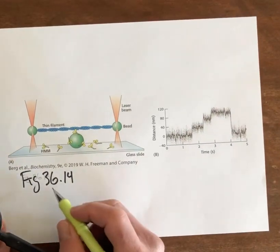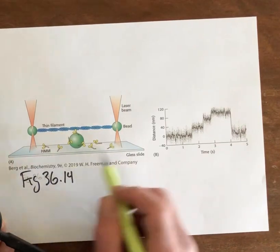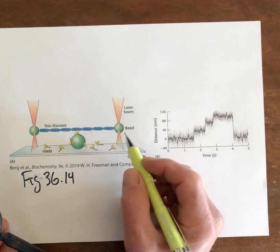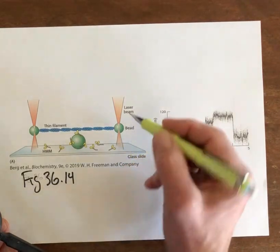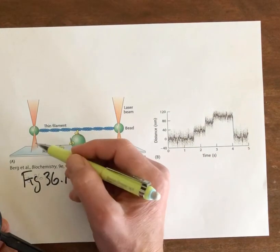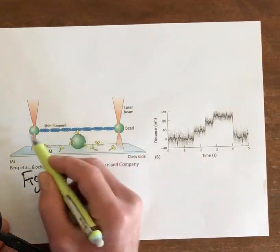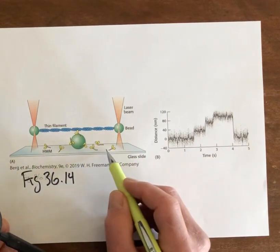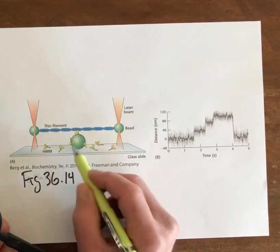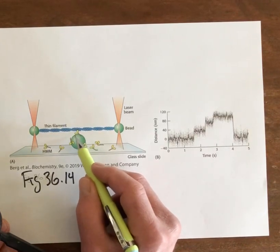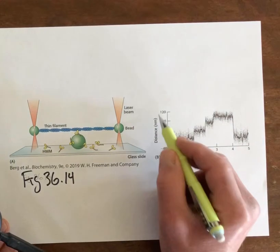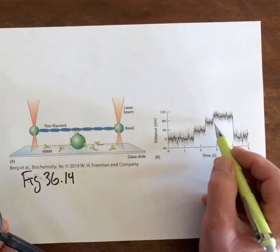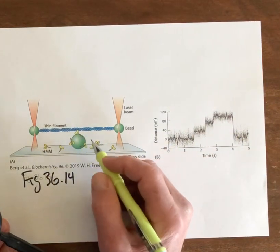In the next figure, taken from chapter 36, figure 36.14, we see a bit more detail for these single molecule experiments. There are fluorescently tagged beads which can be trapped by laser light in so-called optical traps. You can move the traps to stretch an actin filament across a microscope slide. The microscope is then trained on the movement of this fluorescent bead, driven by walking movements of the myosin molecules. The bead position as a function of time shows incremental jumps as a consequence of these walking steps.